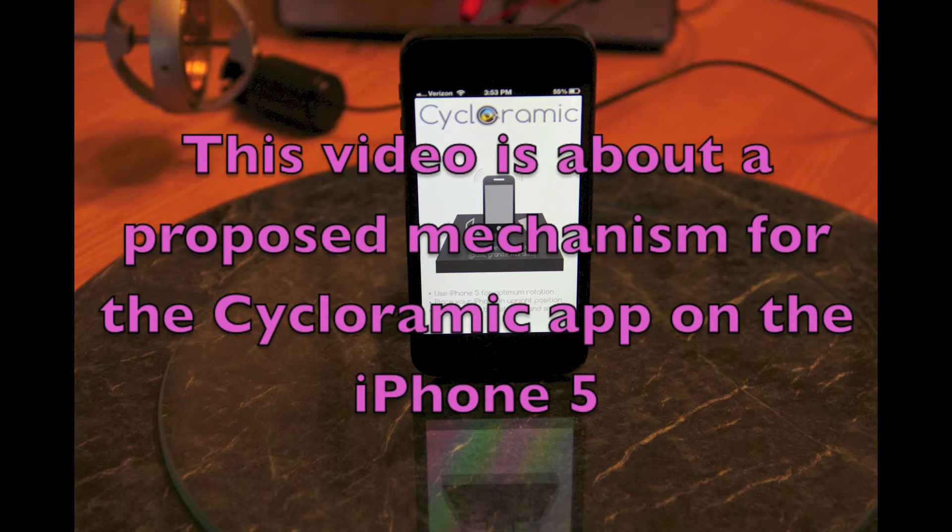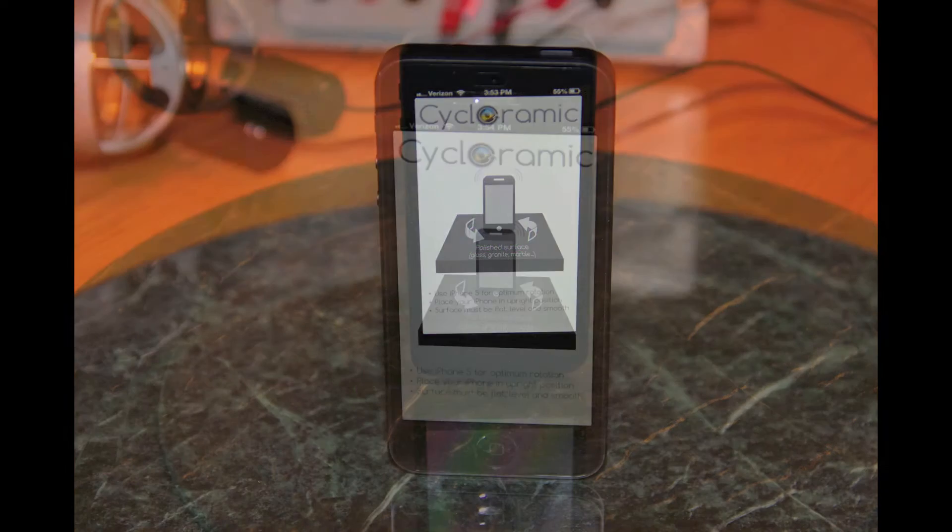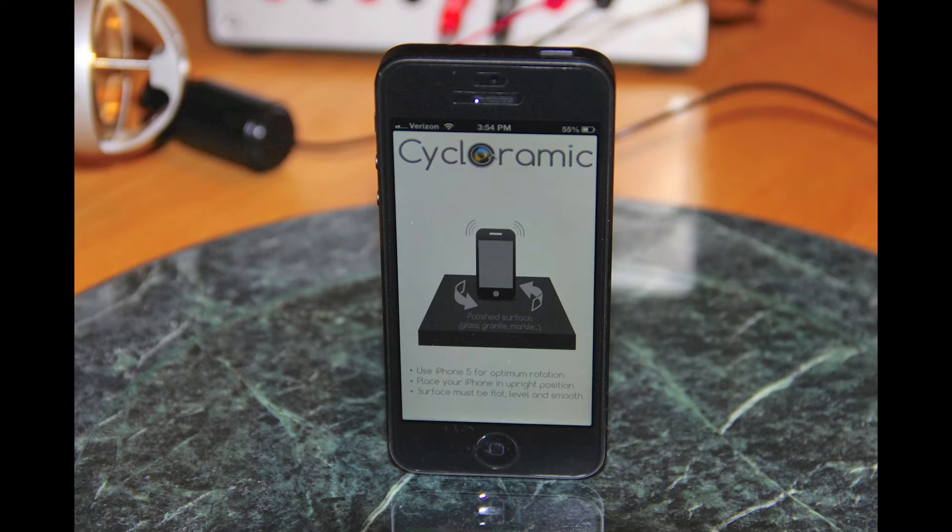This video is about a proposed mechanism for the Cycloramic app on the iPhone 5. The app uses vibration to rotate the phone and take a panoramic video. I'm going to try to explain why the phone rotates when it's vibrating on end.